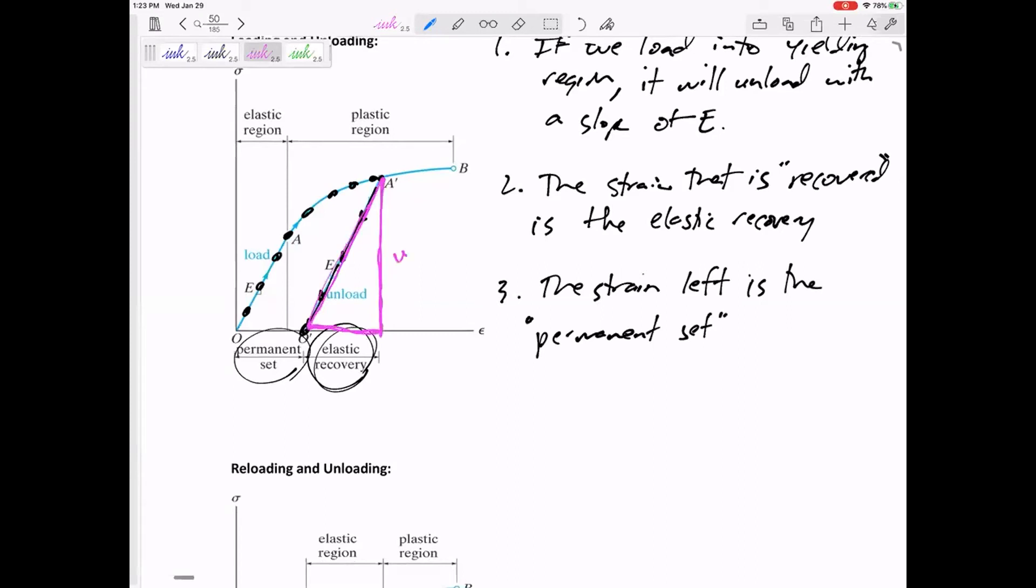So this is our, I like to call this our unloading triangle. The unloading triangle has a slope of E. When this whole stress is let go, the base of that unloading triangle is the elastic recovery, and the amount left over is the permanent set.